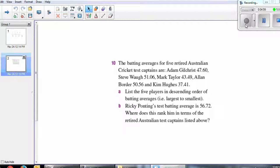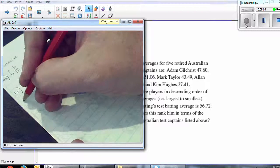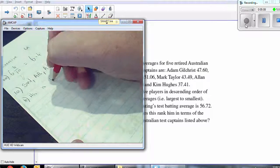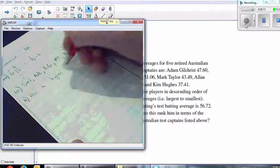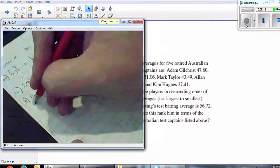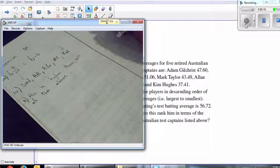For B, Ricky Ponting's test batting average is 56.72. Where does this rank him in terms of the retired Australian test captains listed above? Well, obviously, his is higher than all of the above.